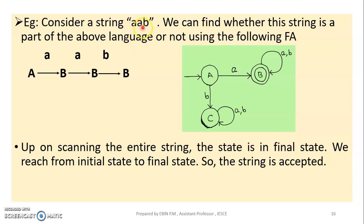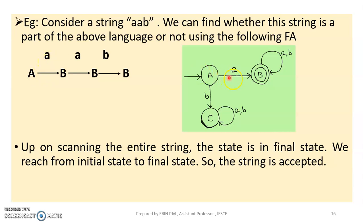We will consider the string 'AAB'. This AAB string is in the language — we will check this one. We start from the initial state. The first state is the starting state. If the state reads a small 'a' symbol, it will go to the next state in the figure. So our state transitions on reading 'a' and then 'b'.